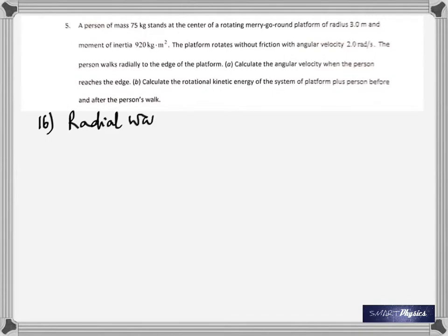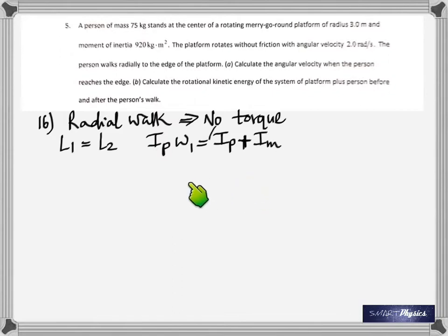In this question, radial walk does not produce a torque, so there is no external torque acting. That's why the angular momentum before and after are the same. I tried to put it this way: this is the moment of inertia of the platform. In the first case, when the man is standing at the center, don't I even have to consider him? Because his radius is zero—he's right at the center. He doesn't contribute anything. But second time, yes he does. I'll have to add the moment of inertia of the platform, which is the same as before, plus the moment of inertia of the man.